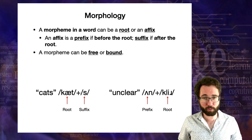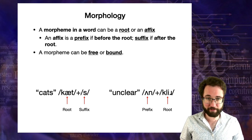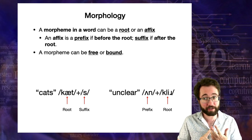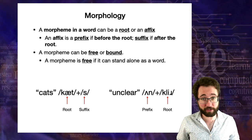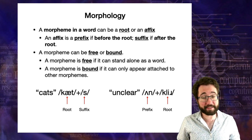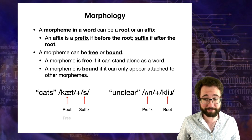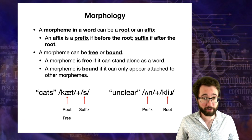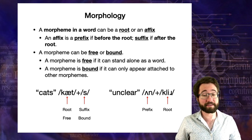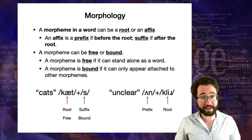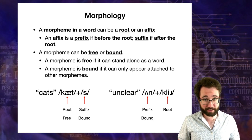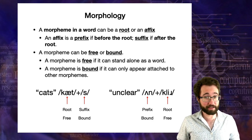A morpheme can also be free or bound. For every morpheme, you should ask: is it a root, prefix, or suffix, and is it free or bound? Free means it can stand alone as a word; bound means it can only appear attached to other morphemes. In 'cats', the root morpheme 'cat' is free because it can stand on its own, whereas the plural suffix 's' is bound. Similarly, in 'unclear', 'un' is bound and 'clear' is free.